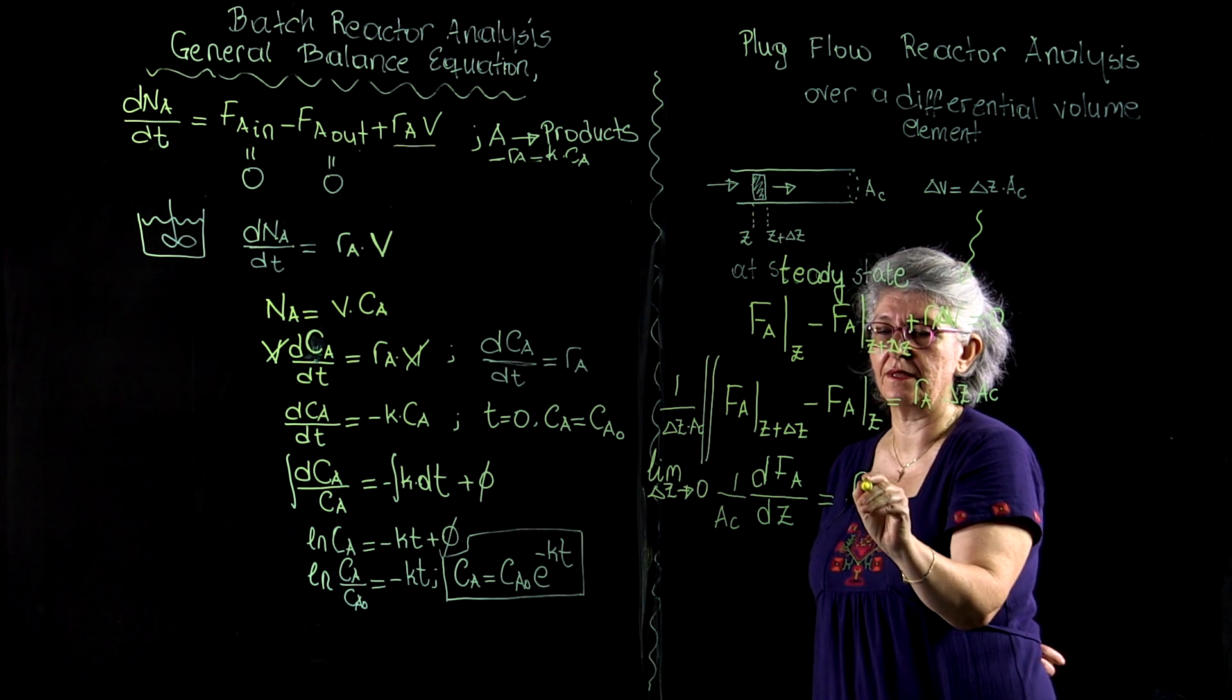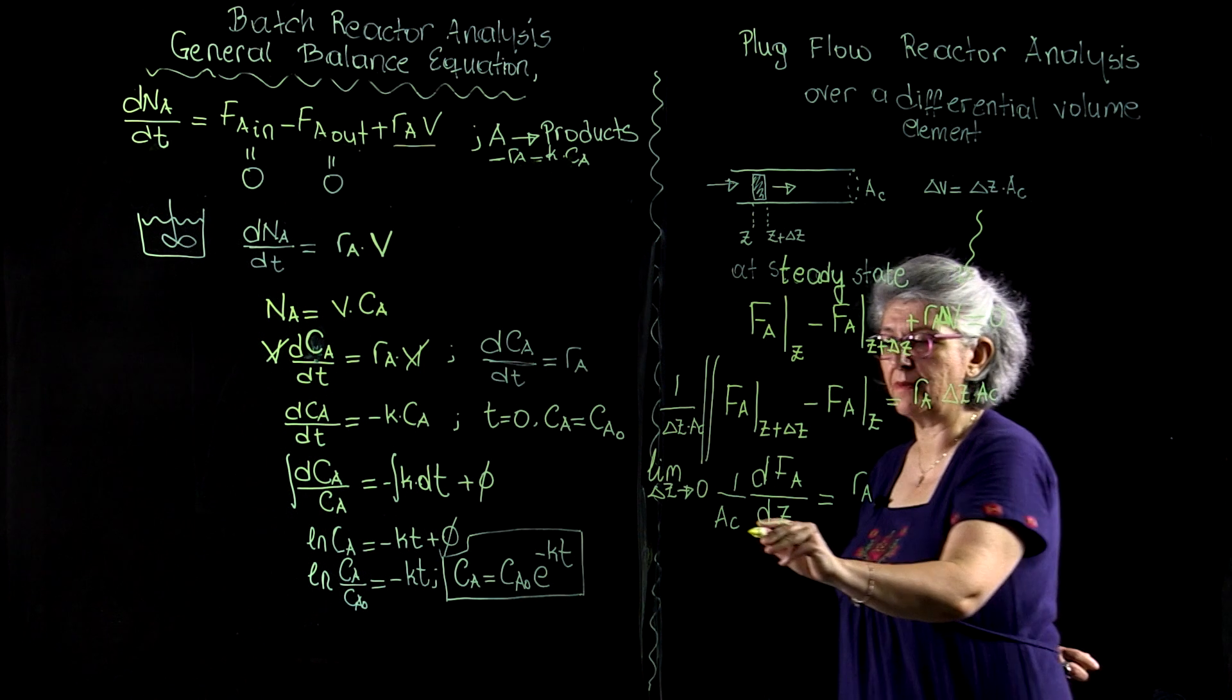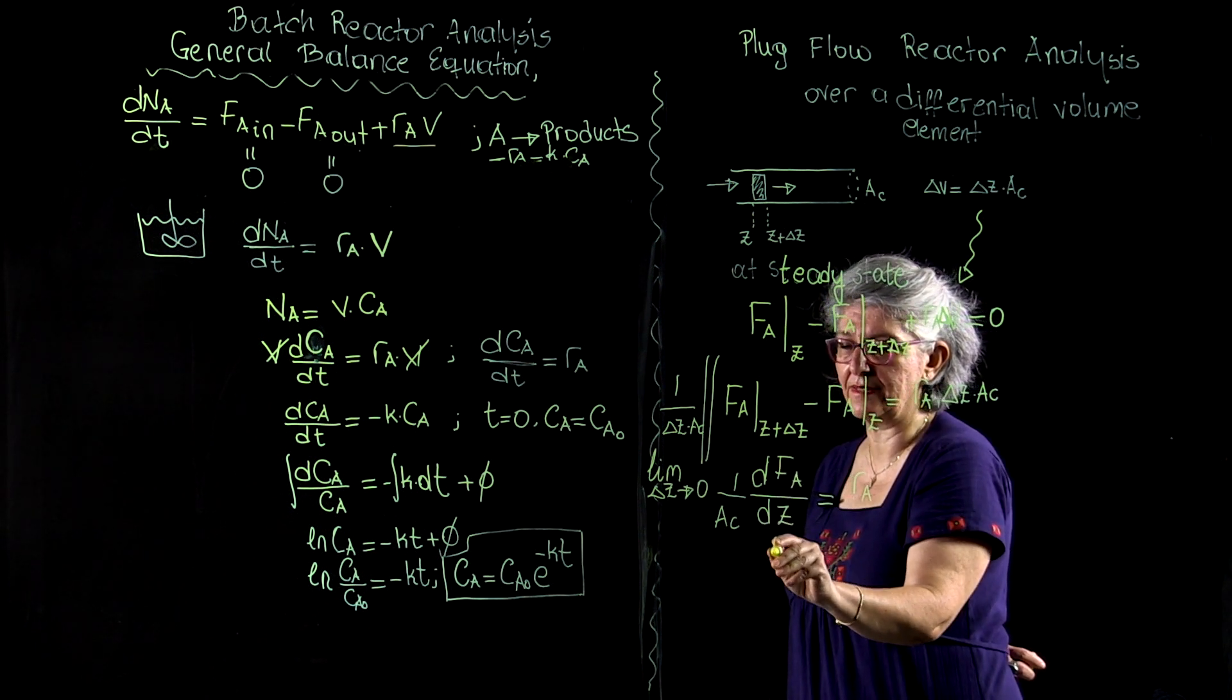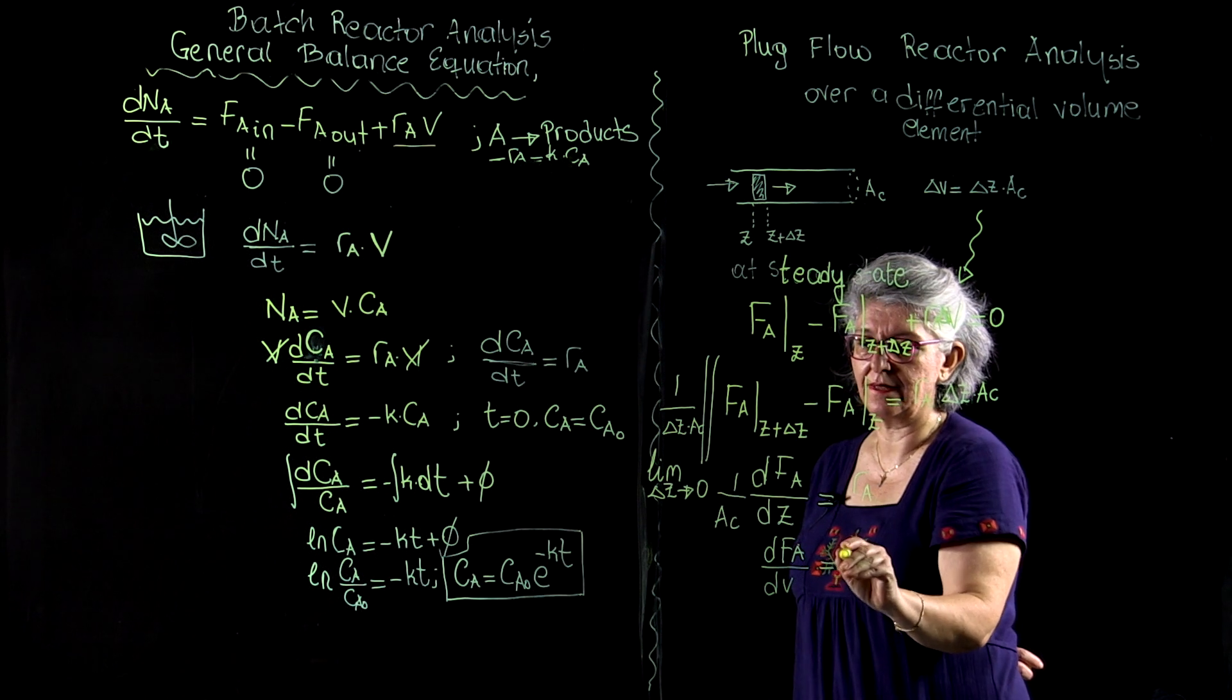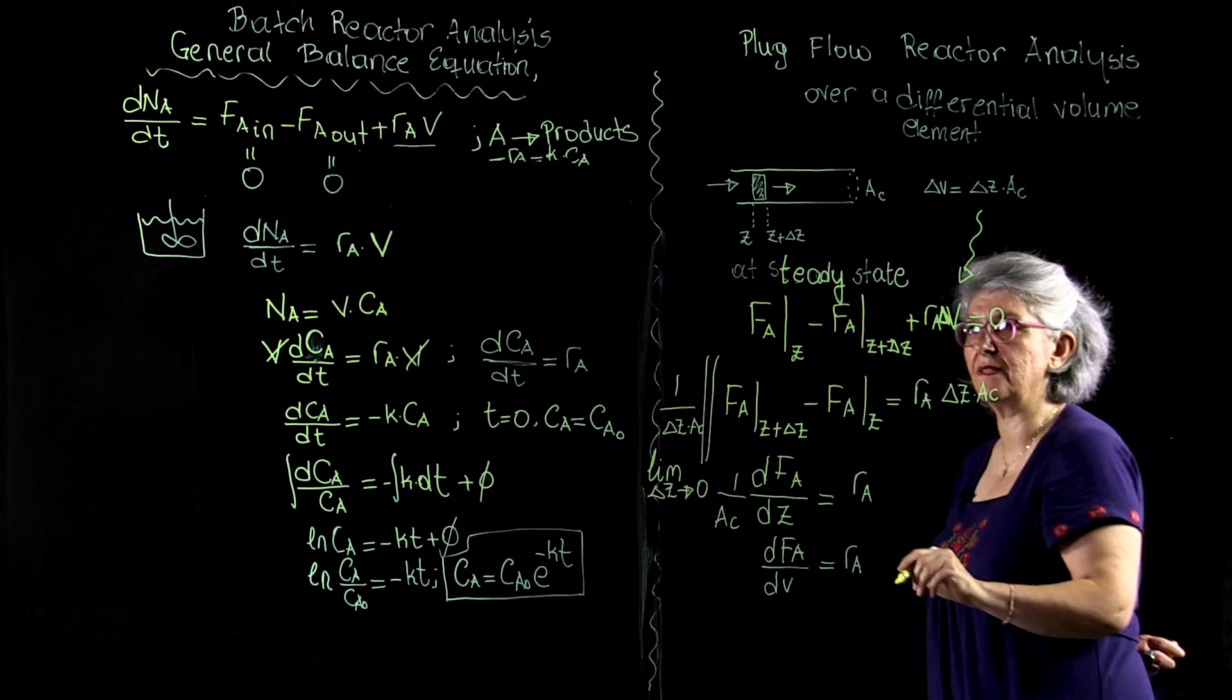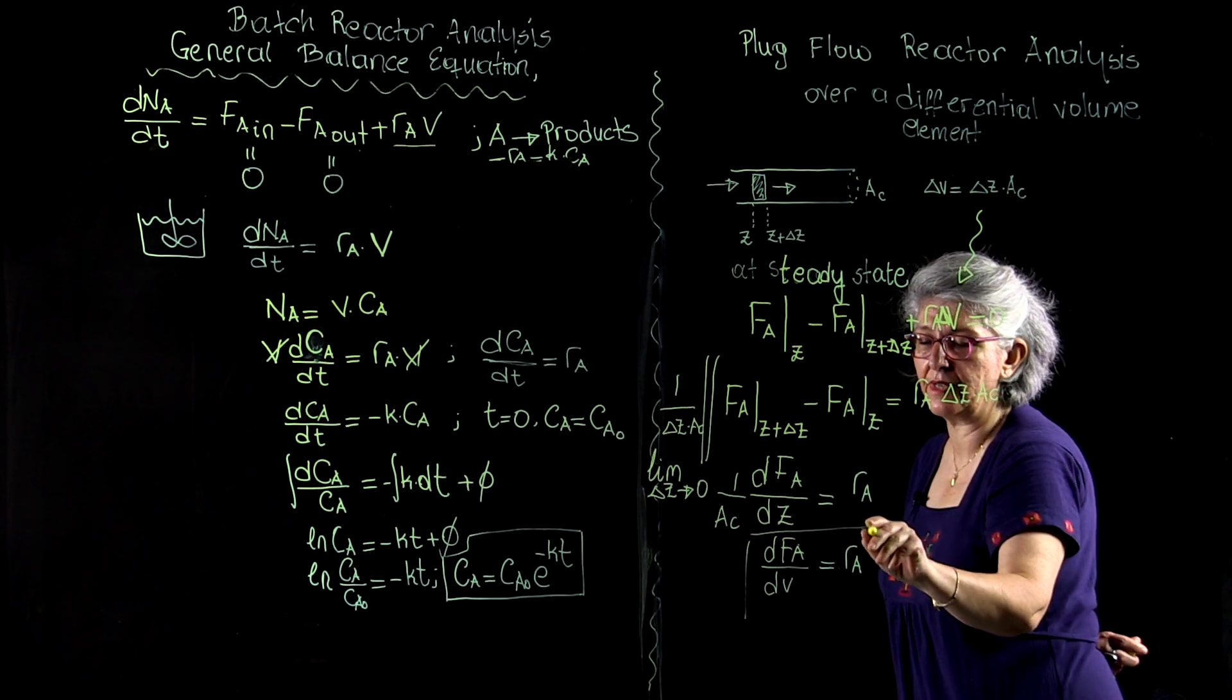As a result of these mathematical intermediate steps, what I get is dF_A/dZ, or I can combine those two terms and write this as dF_A/dV equals R_sub_A for a plug flow reactor.